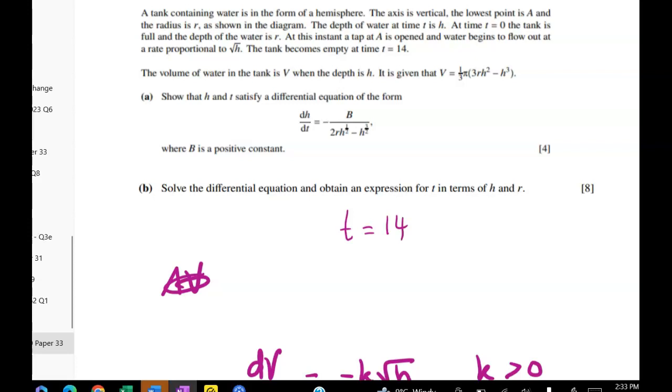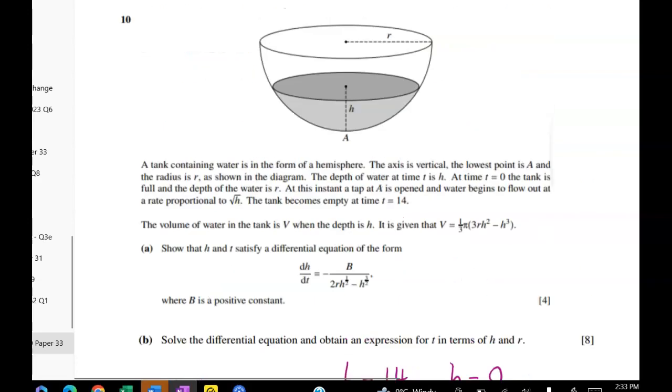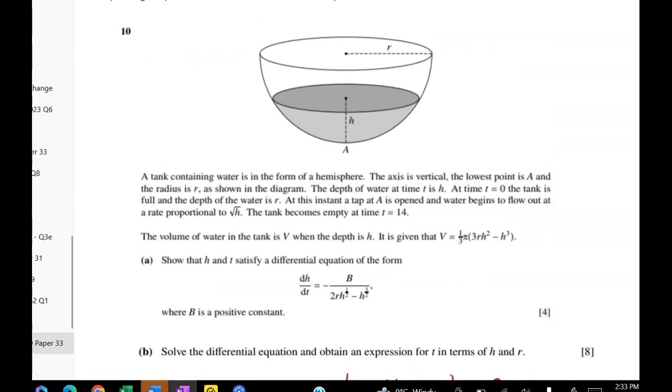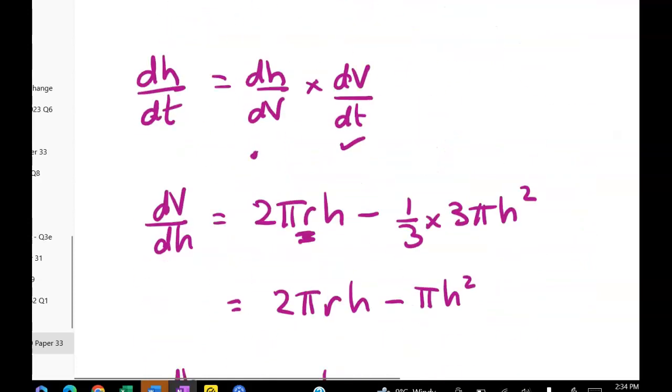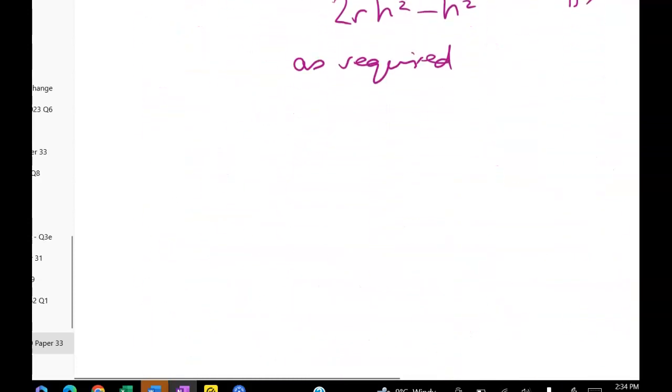So at T equals 14 what do we know? Well we know that H, the height of the water, is equal to zero. And we also know that at the start that T equals zero, we know that the height is the same as the radius. So we were told that the depth of the water is H. And we were told that at T equals zero, the depth of the water is R. So we've got that happening at the start.